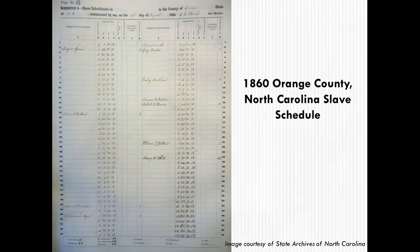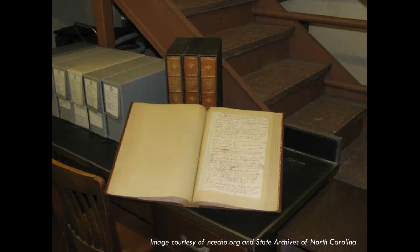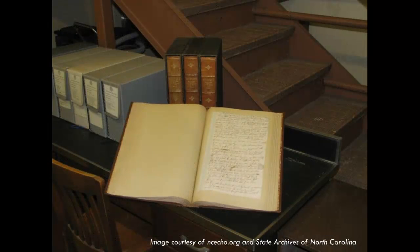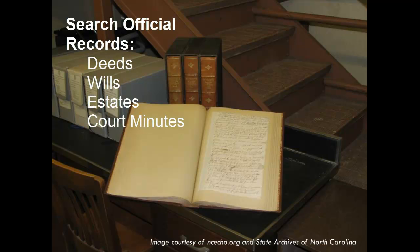Because slave information is primarily available from the former owner's records, you will need to learn as much as possible about the owner and family, including spouse and in-laws, children, and whom each married. One could acquire slaves through purchase, inheritance, marriage, and natural increase — that is, the children, grandchildren, etc. of enslaved adults. Search all types of official records, such as deeds, wills, estates, and court minutes, for the slaveholder and family.